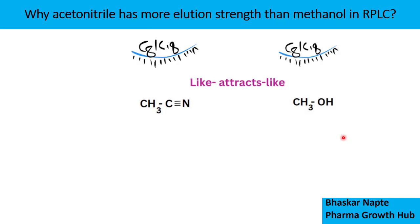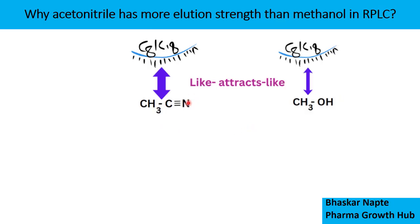ACN is less polar than methanol. Since our stationary phase is also less polar or non-polar, and ACN is less polar than methanol, it is obvious that ACN will have stronger attraction with the stationary phase as compared to methanol. Because methanol is more polar compared to ACN, the stationary phase is going to prefer ACN for interaction. This is represented by the size of the arrows — the bigger the arrow, the bigger the interaction; the thinner the arrow, the thinner the interaction.